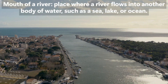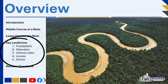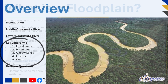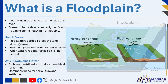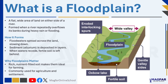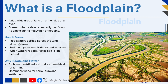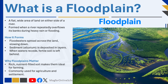Some of the major landforms in the lower course include floodplains, meanders, oxbow lakes, levees, and deltas. A floodplain is the flat, wide area of land found on either side of a river. It forms when the river overflows its banks repeatedly during heavy rain or flooding. As the water spreads out over the land, it slows down and deposits layers of fertile sediment called alluvium. When the floodwaters recede, this sediment remains behind, enriching the soil — making floodplains very good for farming.